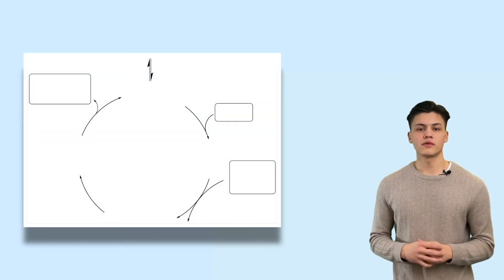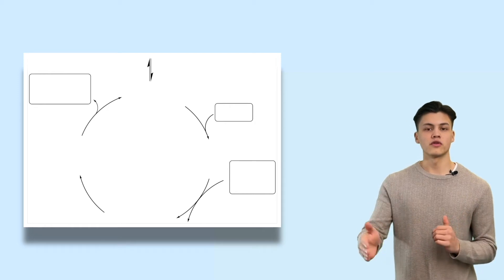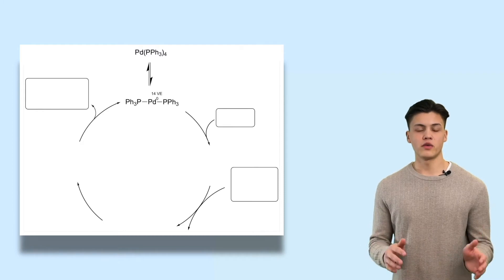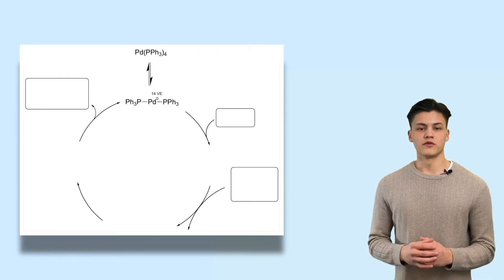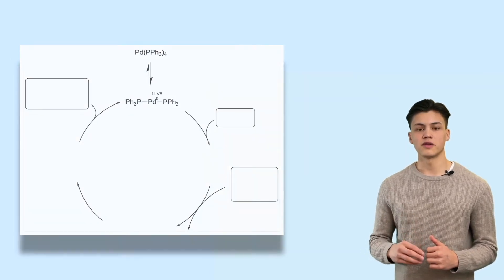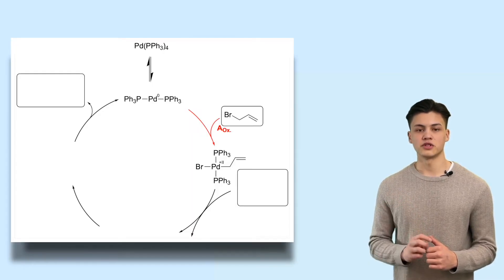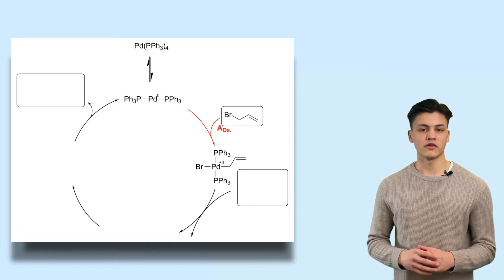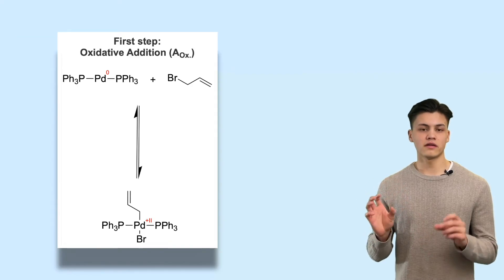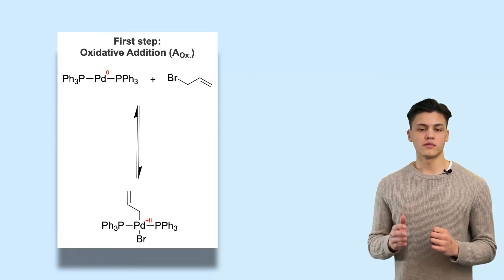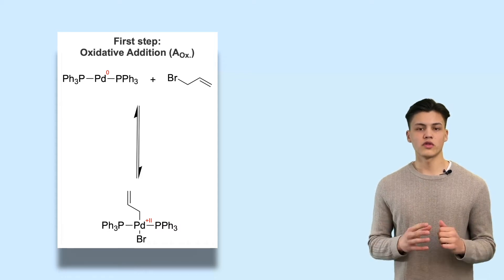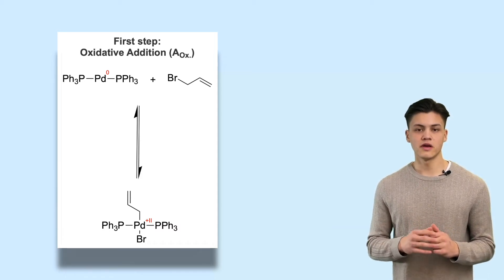If we say the first step of our mechanism is the dissociation of two ligands, it will look like this. Now with our very reactive palladium(0) complex, the first step is an oxidation from palladium(0) to palladium(II) — but it's not only an oxidation, it's an oxidative addition. We take our electrophile, the organic halide, and palladium inserts between the halide and the carbon. As the palladium is oxidized, the carbon is reduced, giving us a negatively charged carbon next to palladium.